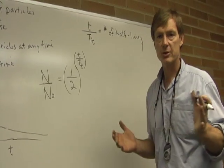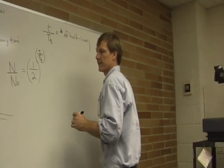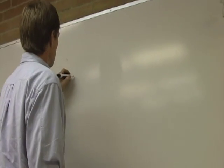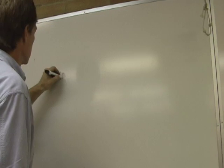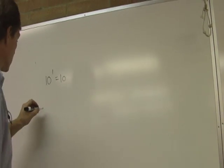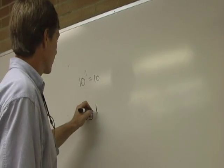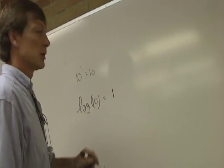And the logarithm is just the power of 10. So for example, let's do it over here on the side. 10 to the 1 is 10. So the logarithm, the base 10 logarithm of 10, is just the power it came from. It's just 1.